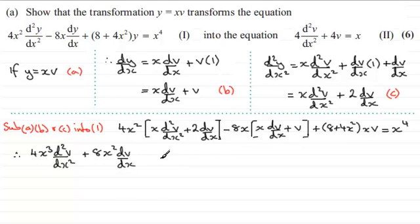Now, going on to this bracket here, we end up with minus 8x squared dv by dx. And then minus 8x times v is going to be minus 8xv. And now we come on to this bracket, when we expand this one, and plus 4x cubed v. And this equals x to the power 4.